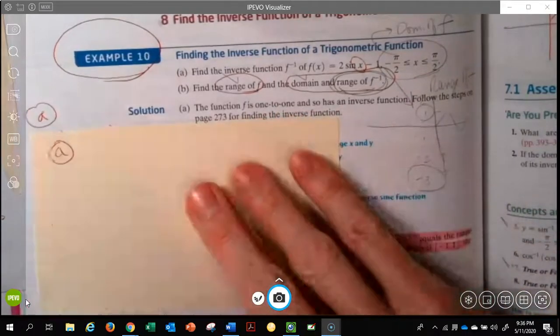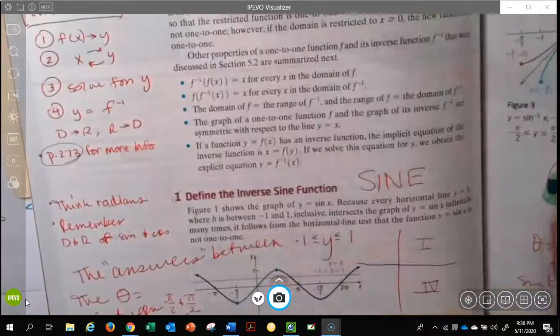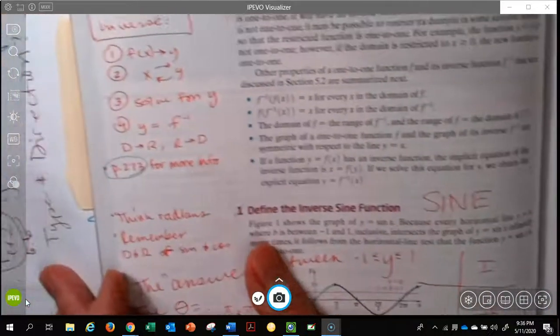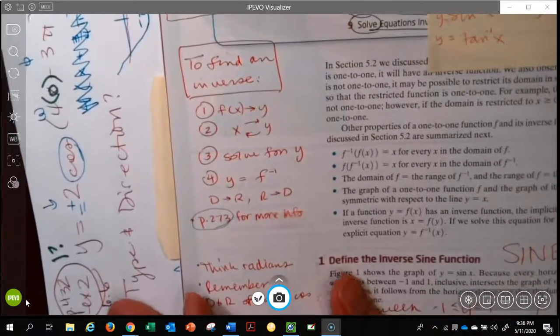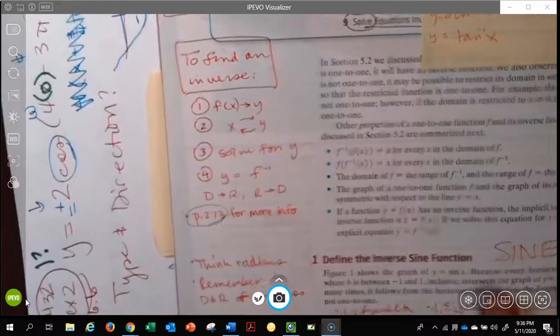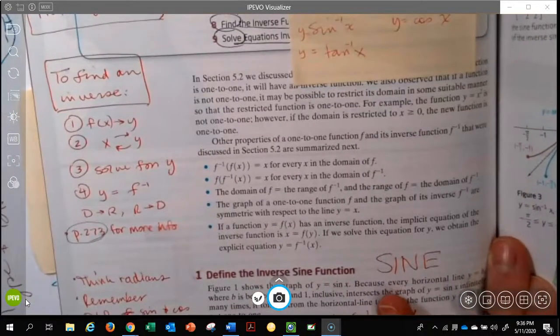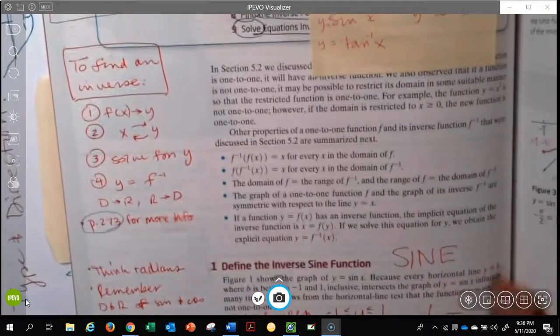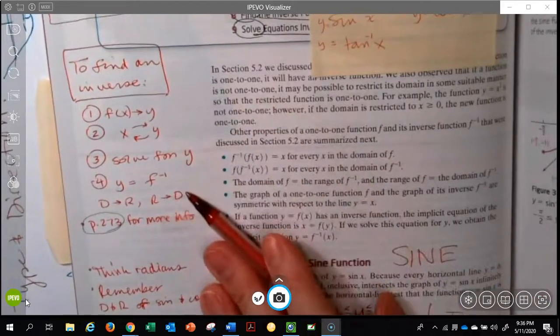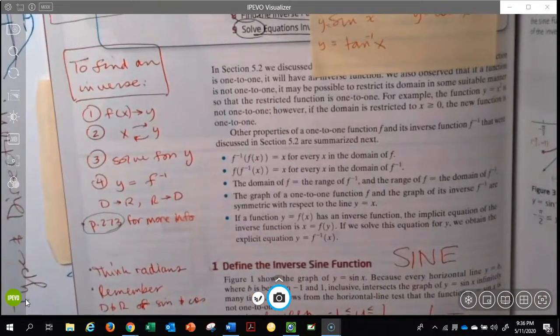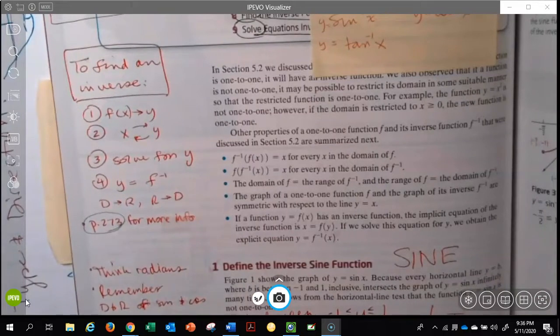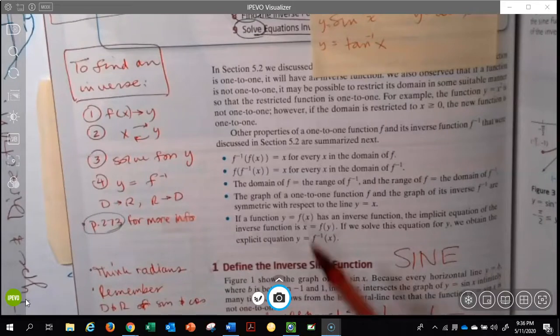It mentions to go look at page 273. I mentioned that in my original video. I'm just going to go up here to the front end of this. It's so funny that y'all can see inside my book, and it's pretty messy, but here's the brief version of to find an inverse. You might want to take a screenshot of this, and it does include page 273 for more information.